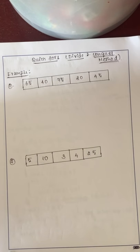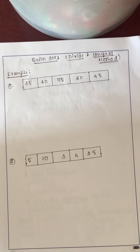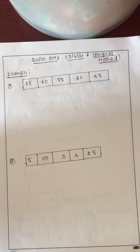Hello everyone. I am going to discuss quicksort in this session. It uses a divide and conquer strategy for sorting unordered elements of an array. Unlike merge sort, quicksort does not divide the array into two equal parts. Instead, it uses a pivot element to divide the array into two parts.